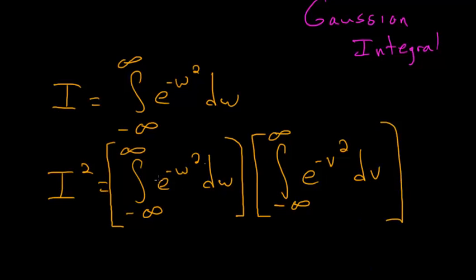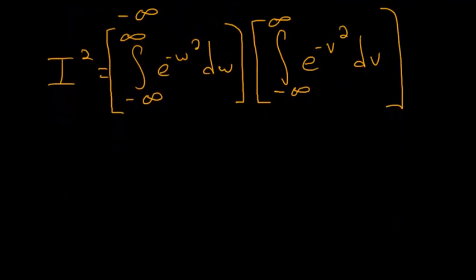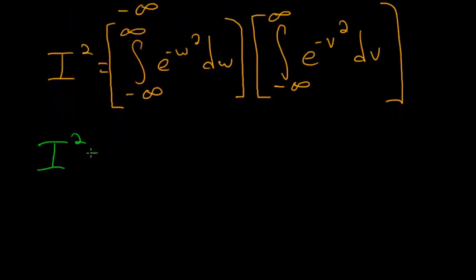And the product of these integrals can just be rewritten as a double integral. So now this i squared is rewritten as the integral from minus infinity to infinity. That's the first integral, and here's the inner integral.